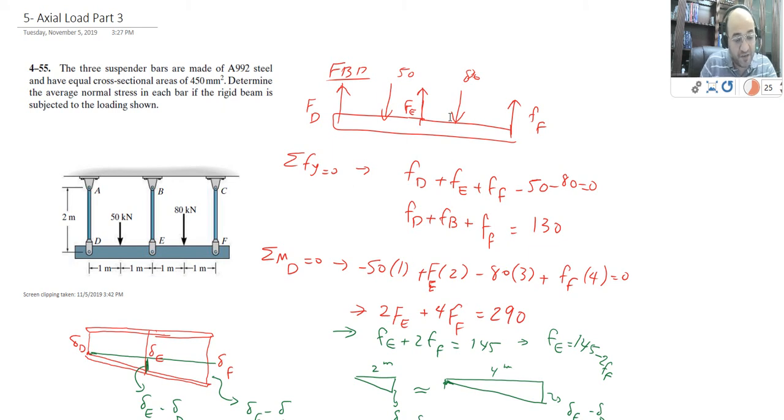Sum of Fy is very easy. You're going to have FD plus FE plus FF minus 50 minus 80 equal to zero. The second one I have, you can end up as FD plus FB plus FF is 130.